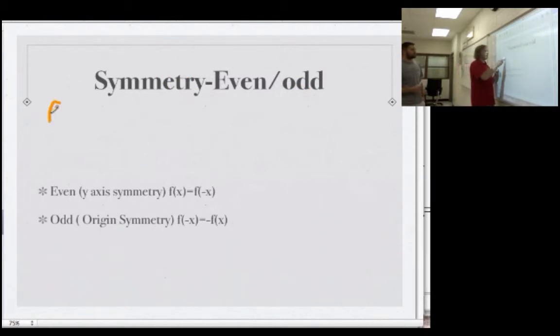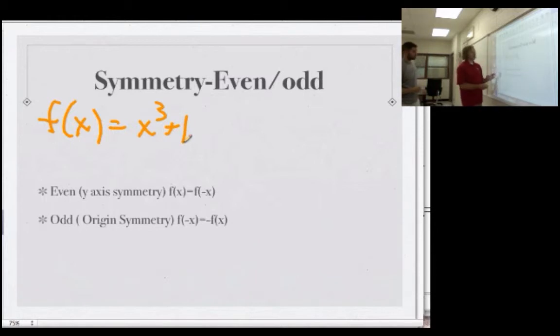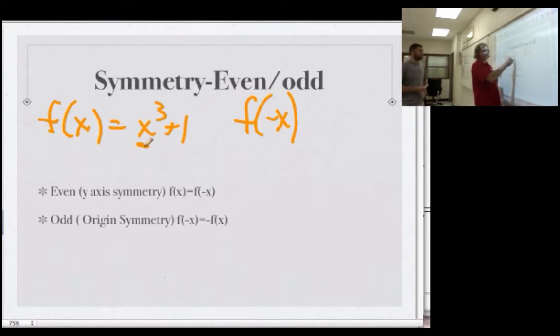Let's say we have f of x equals x cubed plus 1. And a lot of my students say, well, that must be odd, because it's got an odd power there. Well, let's check, what's f of negative x? Well, if you put a negative x in for this, you get negative x times negative x times negative x, negative x cubed plus 1.